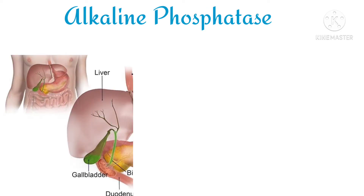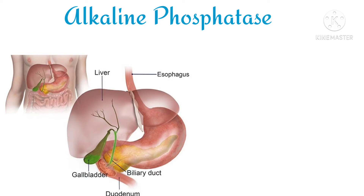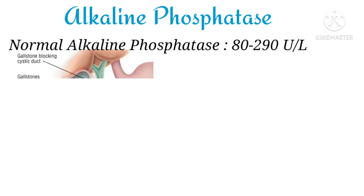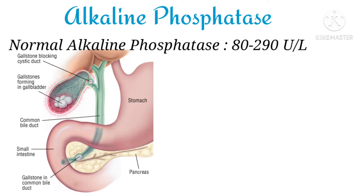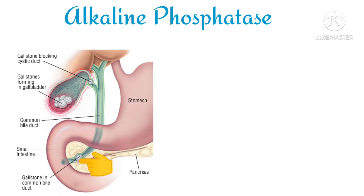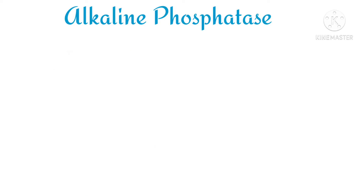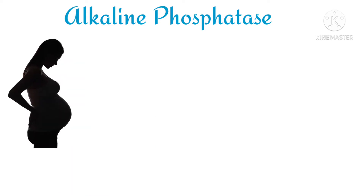Alkaline phosphatase is an enzyme secreted by the biliary duct epithelium. The normal levels of alkaline phosphatase are 80 to 290 units per liter. Whenever there are abnormalities in the liver — especially when there is a blockage in the biliary duct — alkaline phosphatase levels are increased.